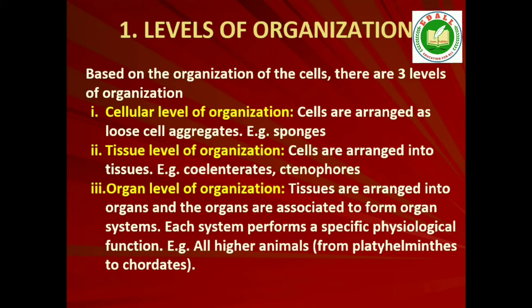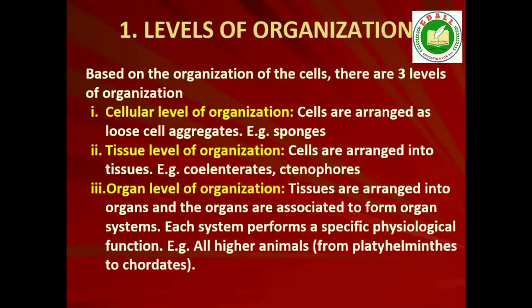In coelenterates, the arrangement of cells is more complex. Here the cells performing the same function are arranged into tissues, hence it is called tissue level of organization. A still higher level of organization, that is, organ level, is exhibited by members of Platyhelminthes and other higher phyla where tissues are grouped together to form organs, each specialized for a particular function.